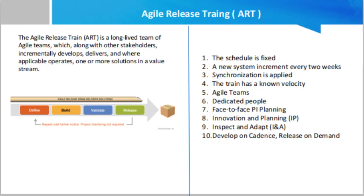Inspect and Adapt means an event is held at the end of every PI where the current state of the solution is demonstrated and evaluated. Teams and management then identify improvement backlog items via a structured problem-solving workshop. Finally, develop on cadence, release on demand — ART applies cadence and synchronization to help manage the inherent variability of research and development. However, releasing is typically decoupled from the development cadence, so ARTs can release a solution or elements of a solution at any time, subject to governance and release criteria.